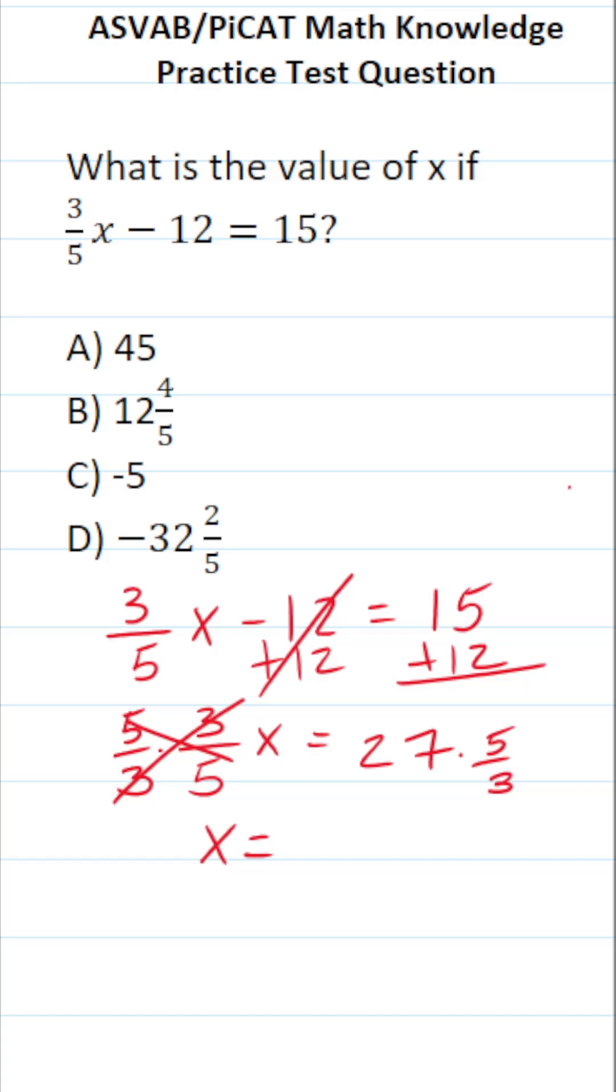What is 27 times 5 over 3? We'll write 27 as a fraction by placing it over 1. Then you can simply cross reduce to make this math much easier.